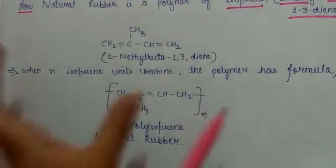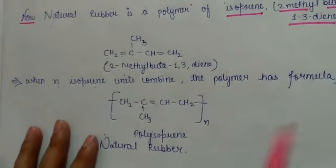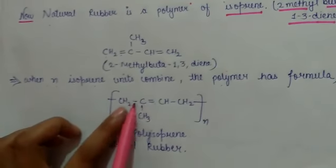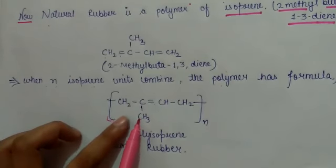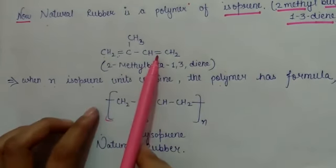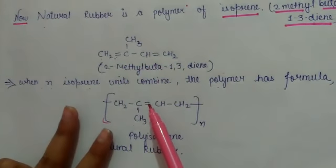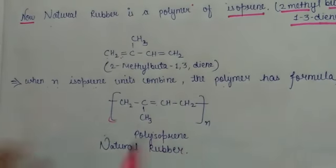When we combine any number of isoprene units, then the polymer formula is CH2-C double bond CH-CH2, with the methyl group on the second carbon. The double bond shifts from first and third carbon to second carbon. Then our polymer isoprene natural rubber will be formed.